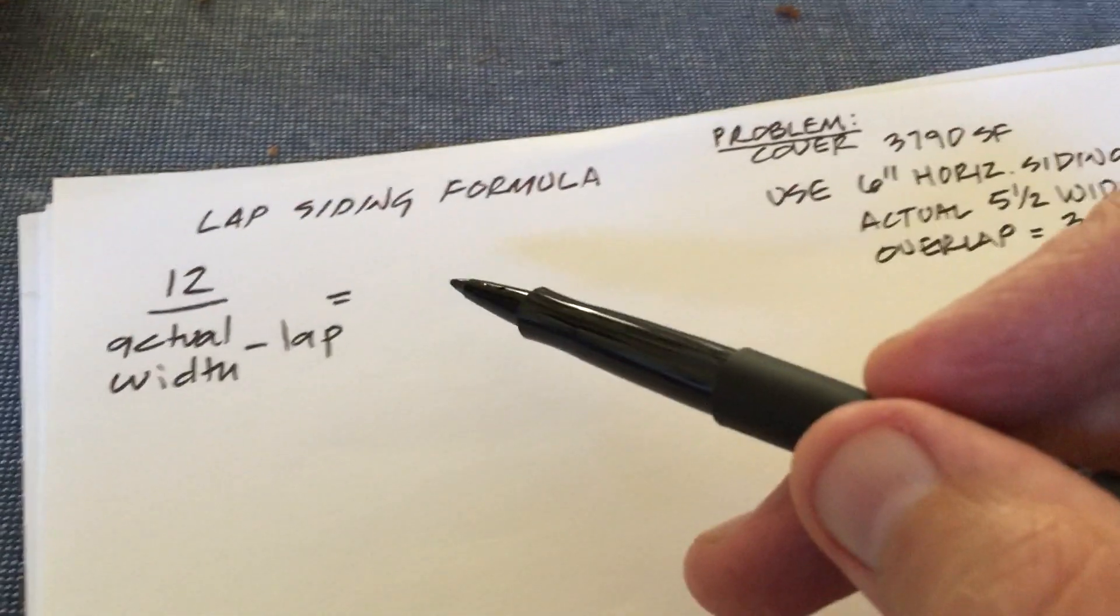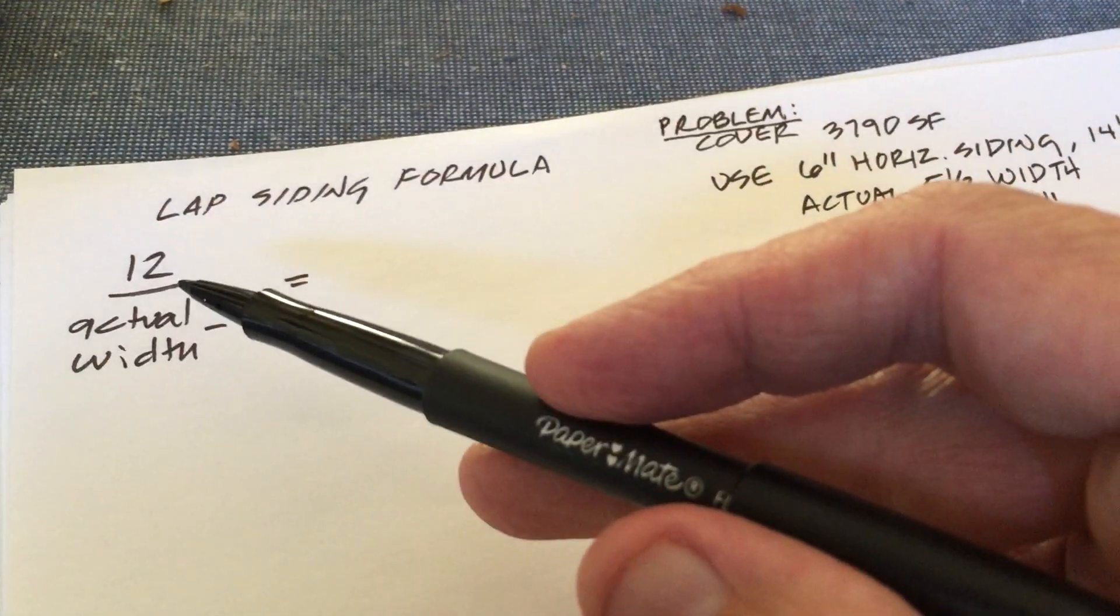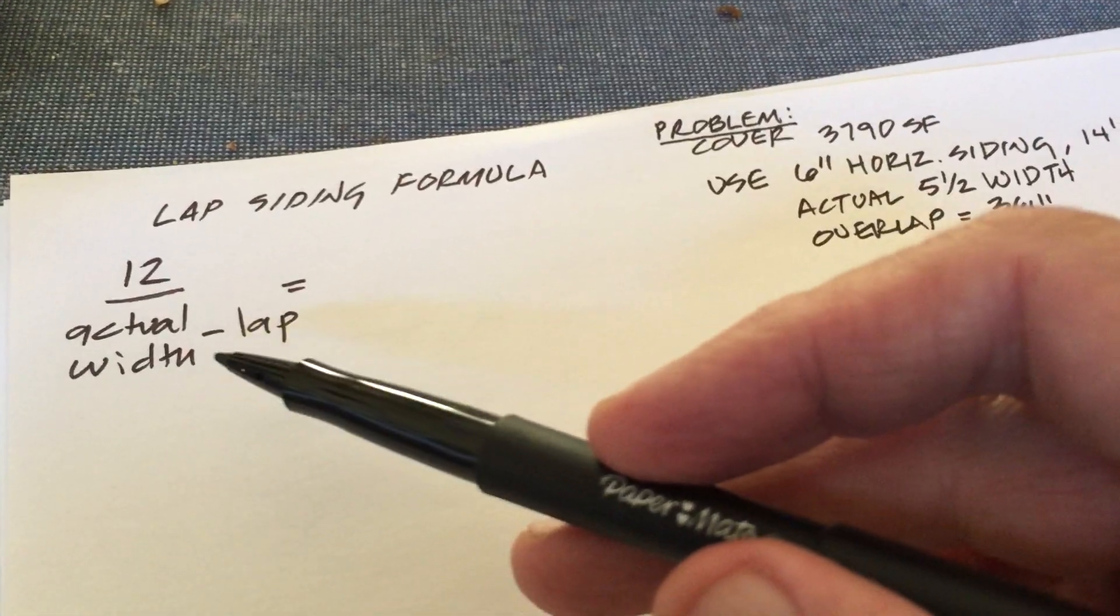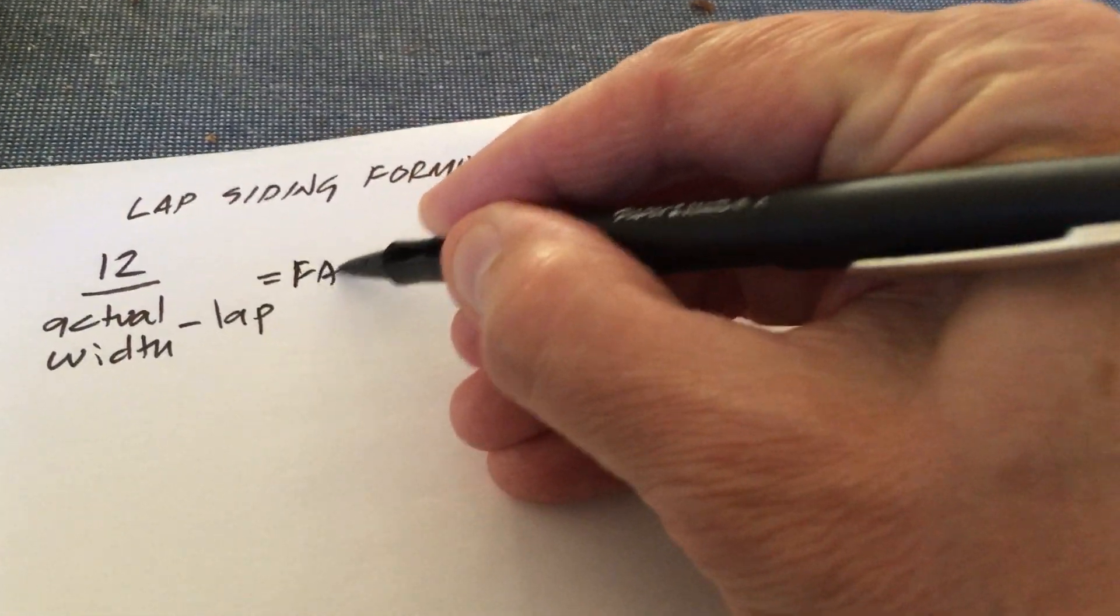We're going to use the lap siding formula. The lap siding formula says that we take the number 12, we divide it by the actual width minus the lap and that will give us a factor that we can use.